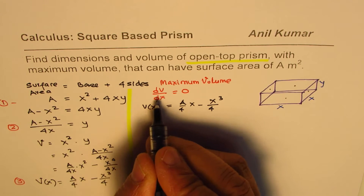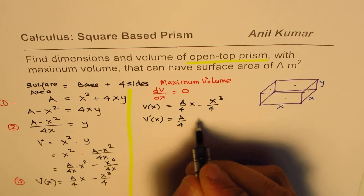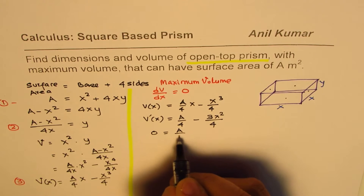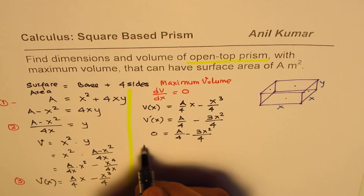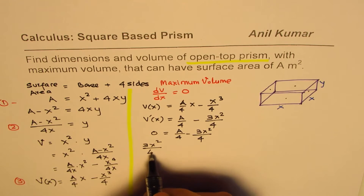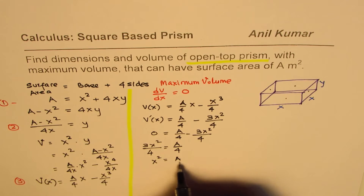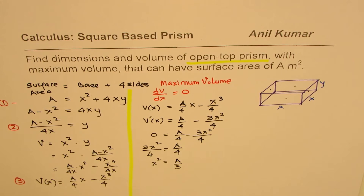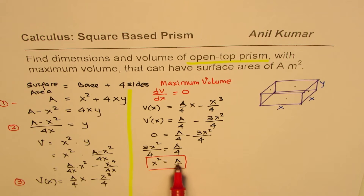We find the derivative dV/dx = A/4 − 3X²/4, and set it equal to zero. So: A/4 − 3X²/4 = 0, which gives 3X²/4 = A/4, and therefore X² = A/3. Since X² is the base area, this is a very important relation: the base area equals one-third of the total surface area.